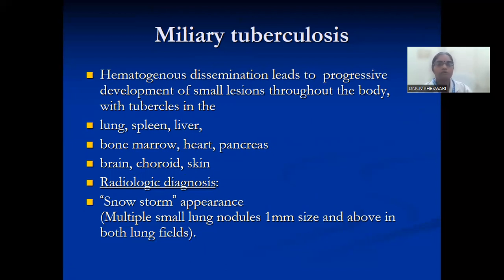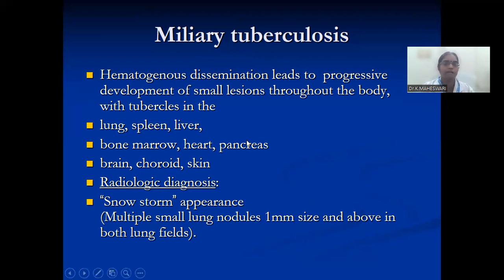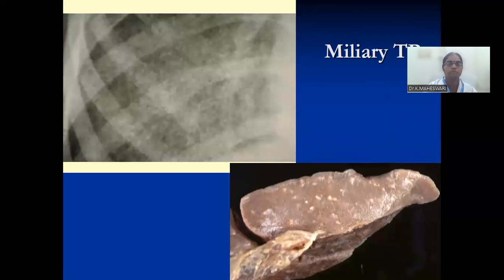Miliary tuberculosis: hematogenous dissemination leads to progressive development of small lesions throughout the body — liver, lung, spleen, bone marrow, heart, pancreas, brain, and skin. Radiological diagnosis shows a snowstorm appearance, with small lung nodules of 1 mm or more throughout the lung fields — small, small nodules throughout both lung fields.